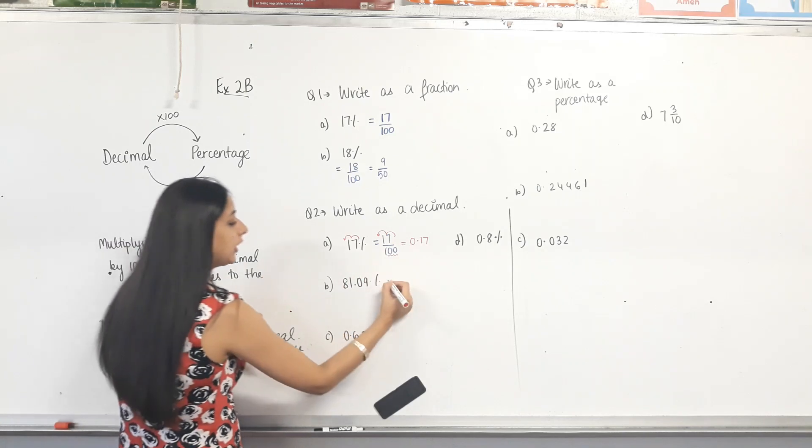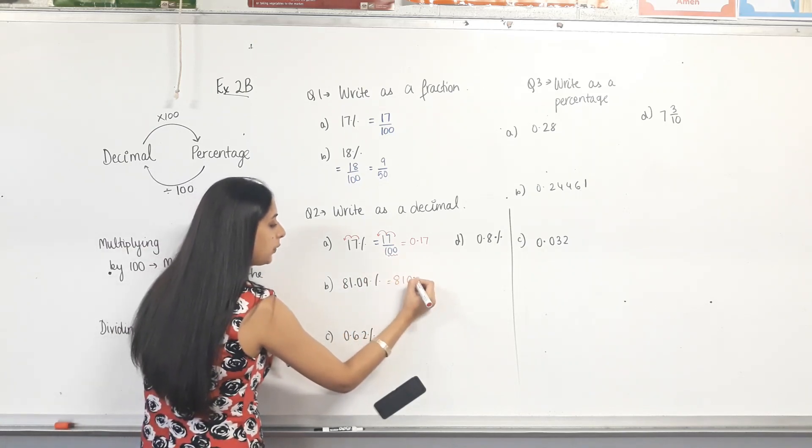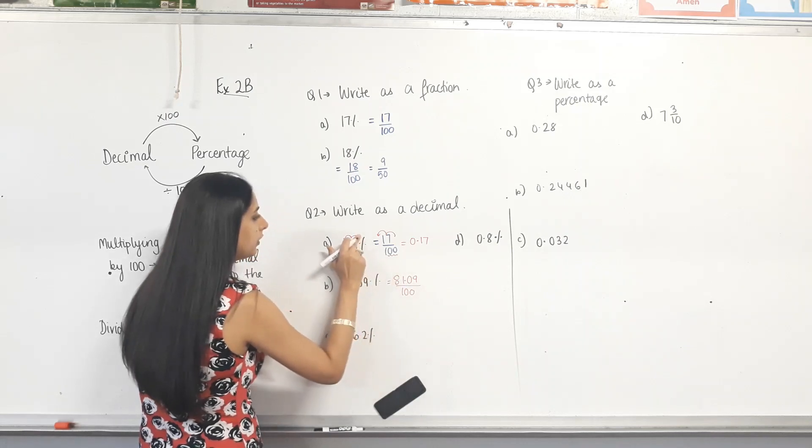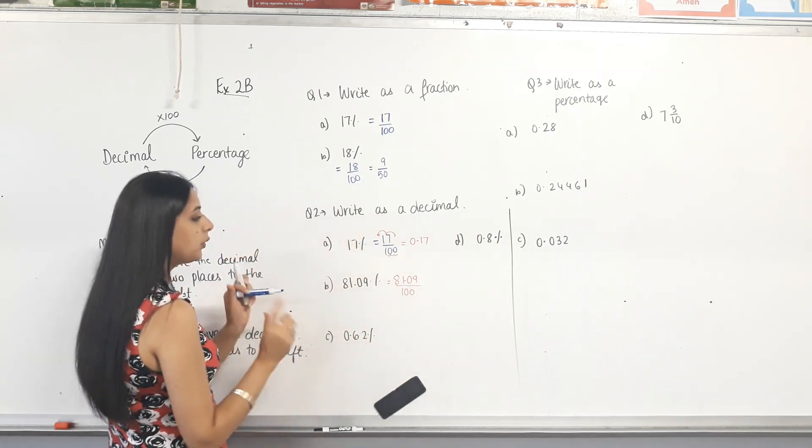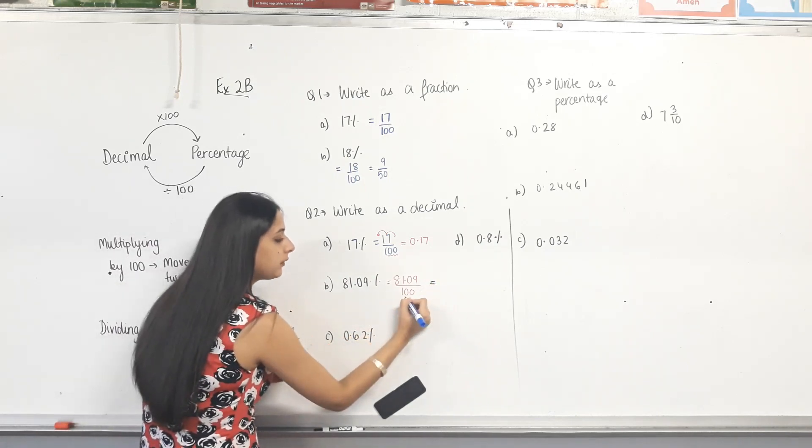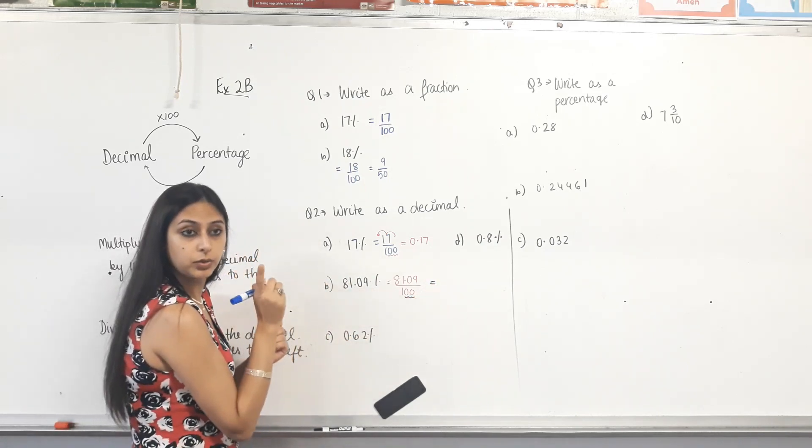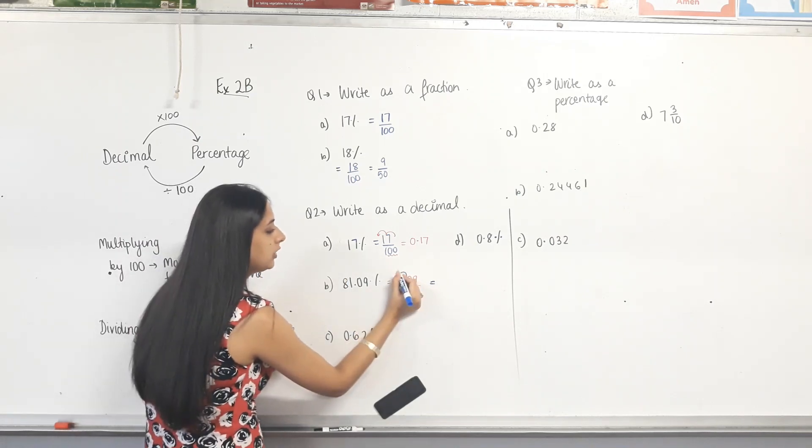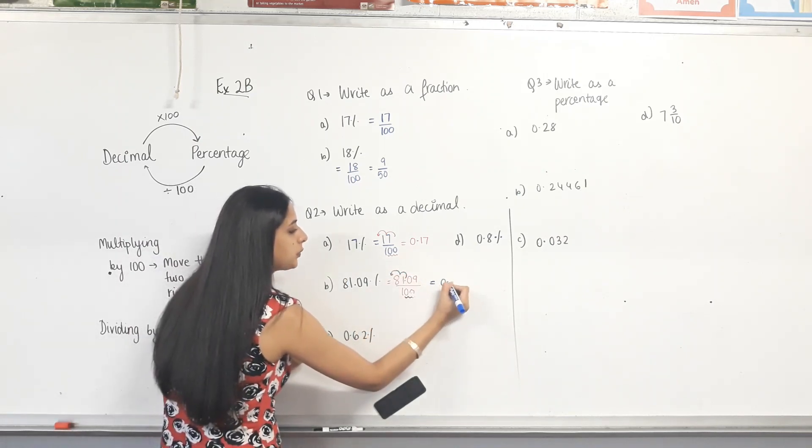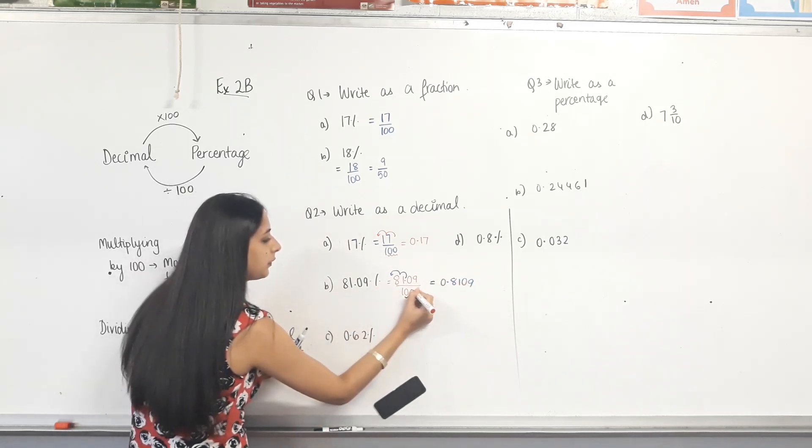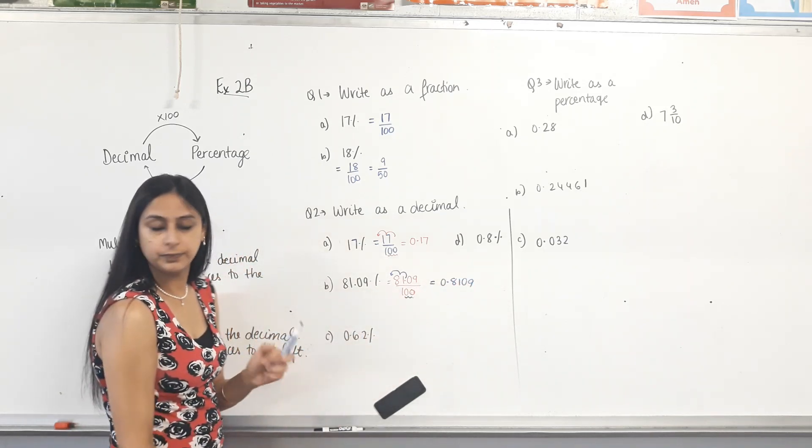Next one. Again, 81.09 over 100. Now, you are dividing a decimal by 100. How many zeros are you dividing by? 2. So you move the decimal two places to the left. 1, 2. So answer is 0.8109. Make sense?